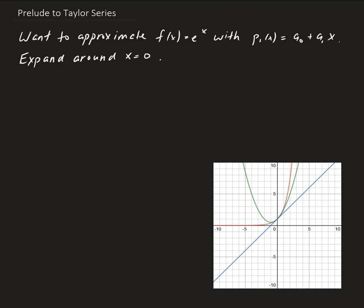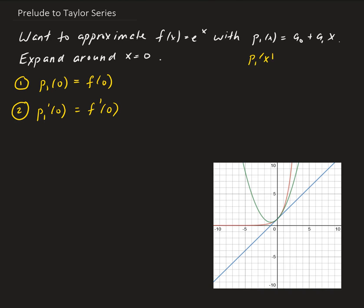So our first condition: we want p of the polynomial at 0 to be equal to the function value at 0. The second condition is that we want the derivative of p at 0 to be equal to the derivative of the function at 0. This gives us two equations, and from those two equations we can solve for a0 and a1. Let's go ahead and calculate the first derivative of p. Taking the derivative of our polynomial, a0 is constant, so that leaves us with a1.